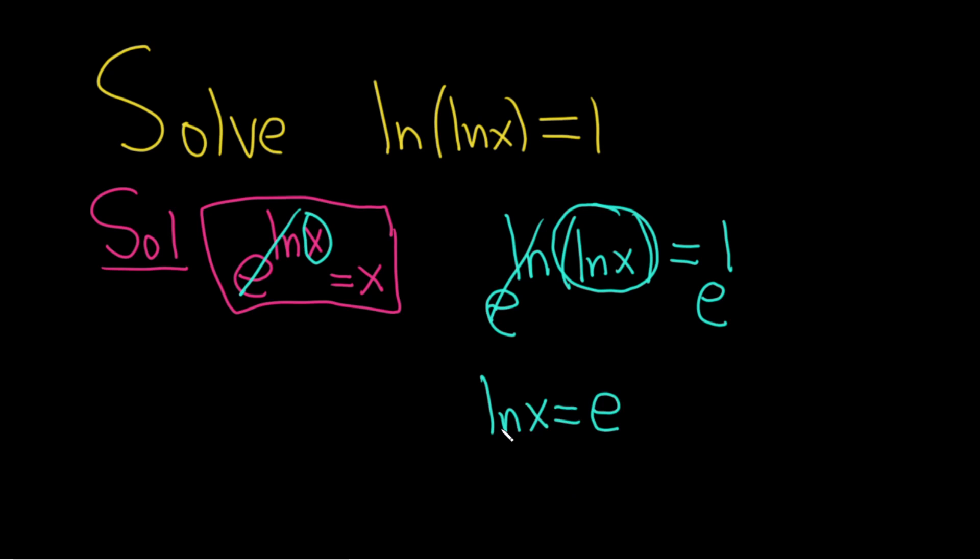Then we just repeat the process. We do it again. We exponentiate. These go away. And so we get x equals e to the e. And this would be the solution to this equation.